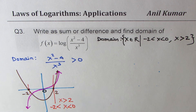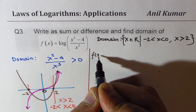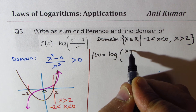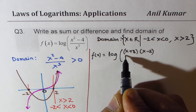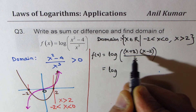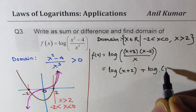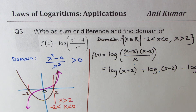Now write f(x) as a sum or difference. Factoring the numerator: x²−4 = (x+2)(x−2). So f(x) = log((x+2)(x−2)/x³) = log(x+2) + log(x−2) − log(x).